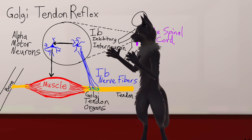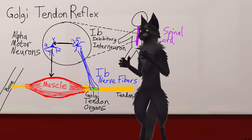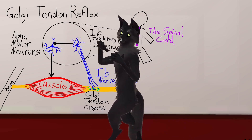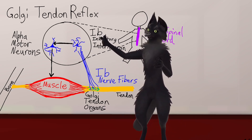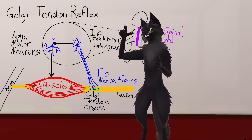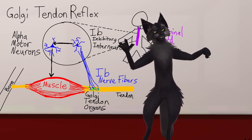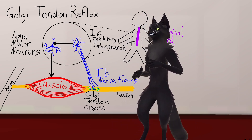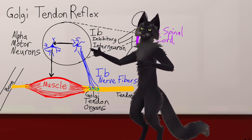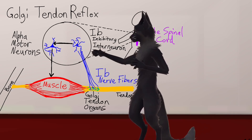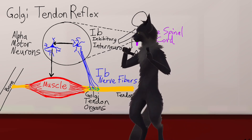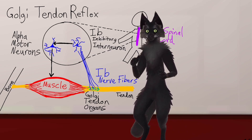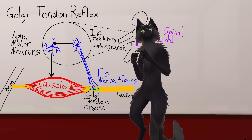An interesting thing about this closed loop controller design is that you can increase the set point by exciting the alpha motor neurons, or you can decrease the set point by activating the 1b inhibitory interneurons. This is important when you get into cascade control and there are multiple signals trying to influence this controller at once. For example, one signal might tell the alpha motor neurons to push harder, while a pain receptor saying that hurts can activate the 1b inhibitory interneuron, which decreases the tension set point on the muscle and keeps your joint from being pushed past its normal range of motion.